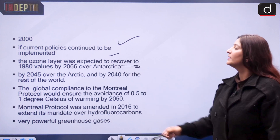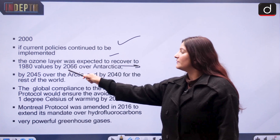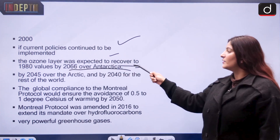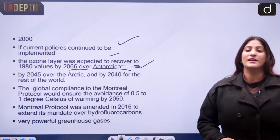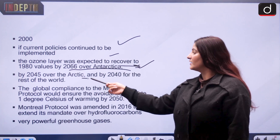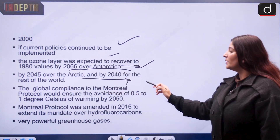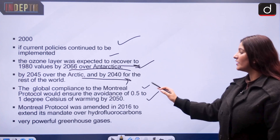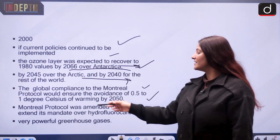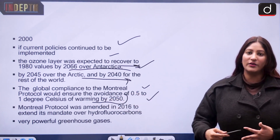If current policies continue to be implemented, the ozone layer is expected to recover to 1980 values by 2066 over Antarctica, by 2045 over the Arctic, and by 2040 for the rest of the world. Global compliance with the Montreal Protocol would also ensure the avoidance of 0.5 to 1 degree Celsius of warming by 2040, meaning it also helps keep climate change in check.